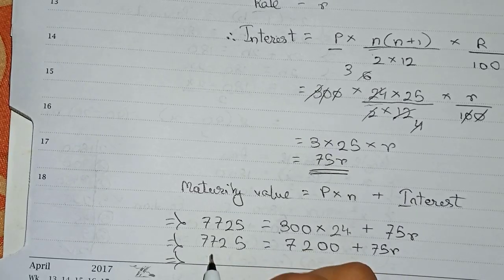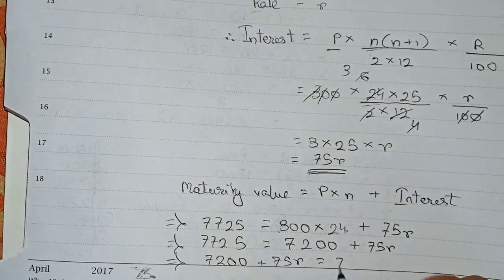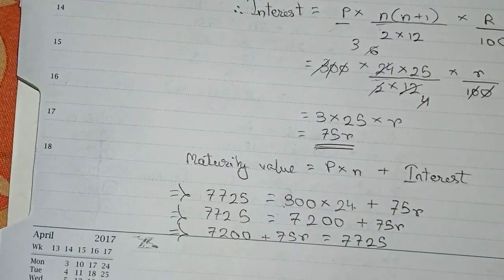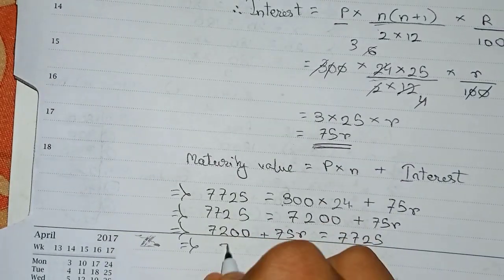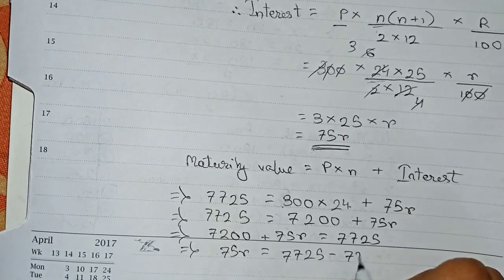So now I will just rotate the equation in this manner: 7200 plus 75r is equal to 7725. We have just rotated the equation. So now 75r will be equal to 7725 minus 7200.